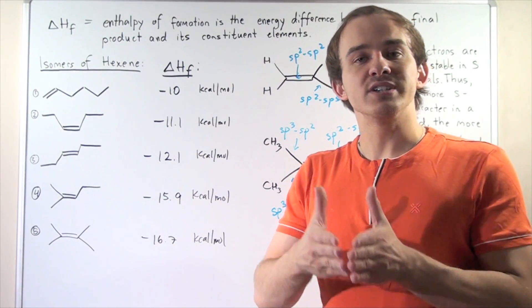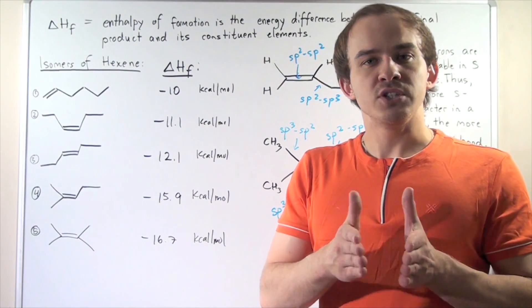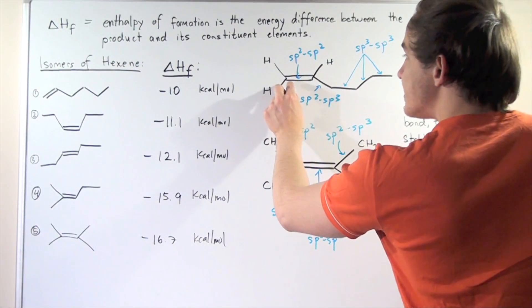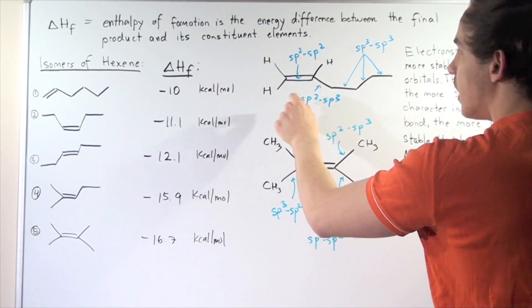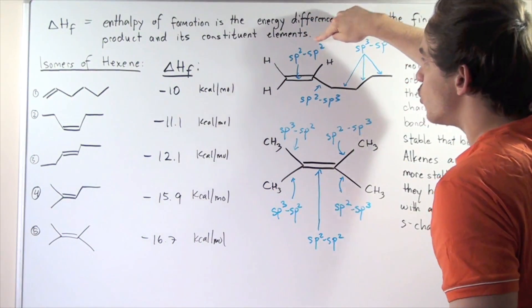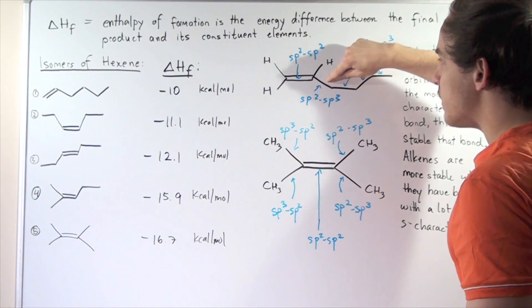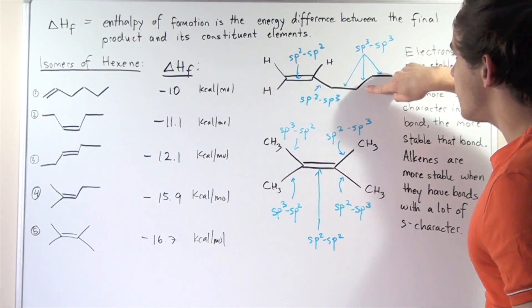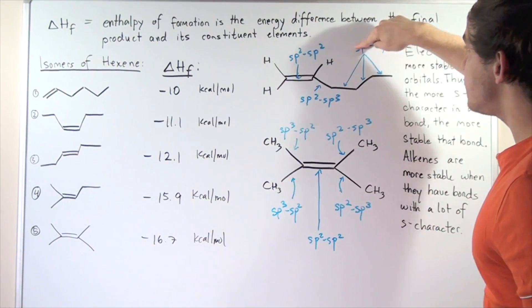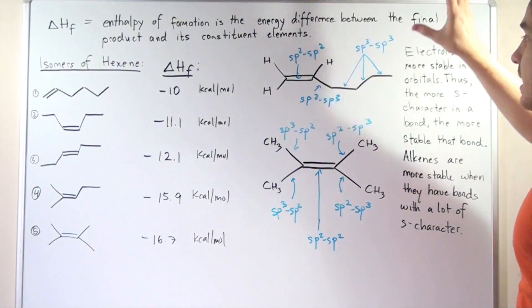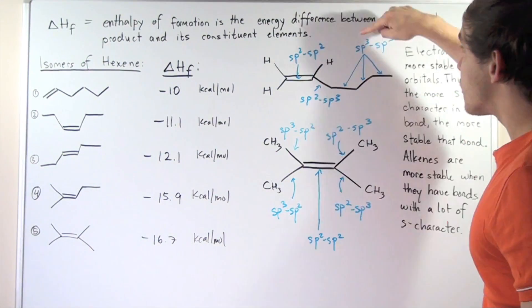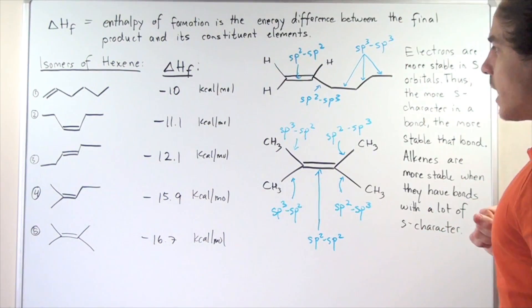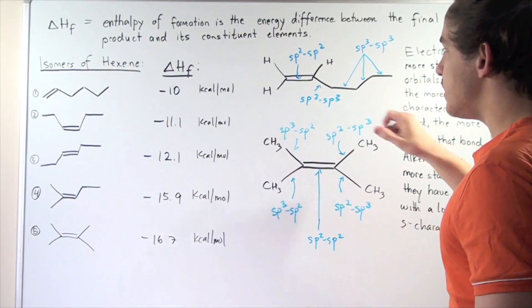So this sigma bond within the double bond contains sp2, sp2 character. This bond, this covalent bond has sp2, sp3 character. And each of these three covalent bonds has sp3, sp3 character each. So we have three sp3, sp3 bonds, we have one sp2, sp2 bond, and we have one sp2, sp3 bond.